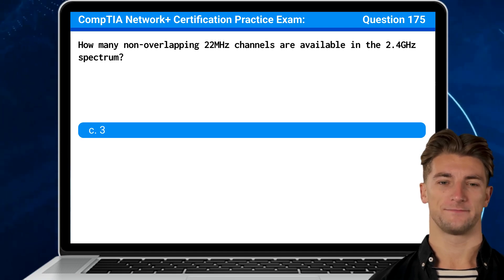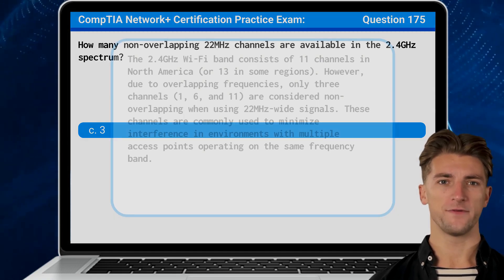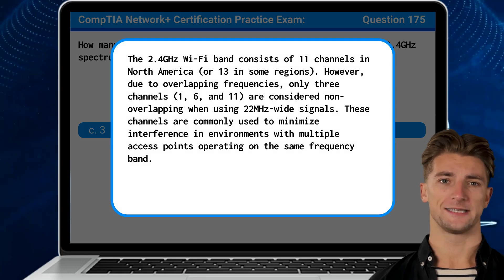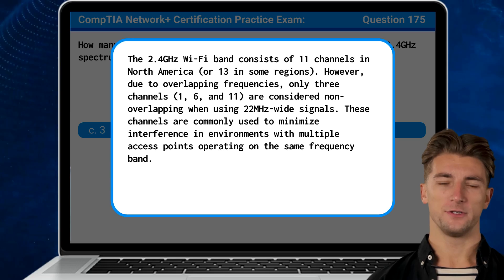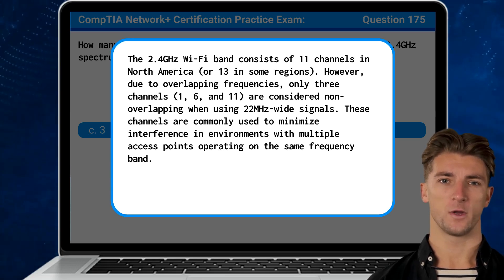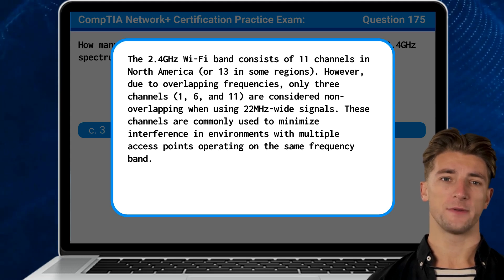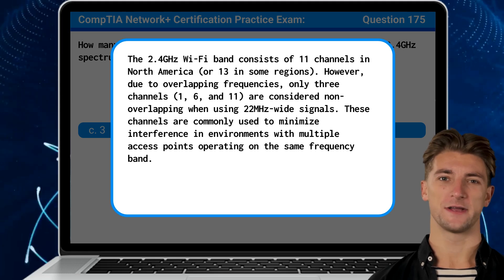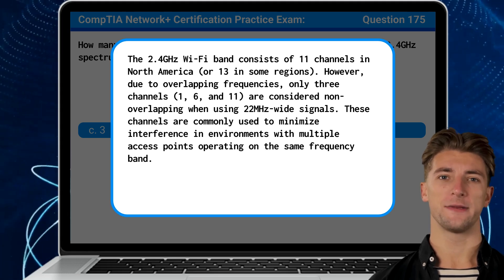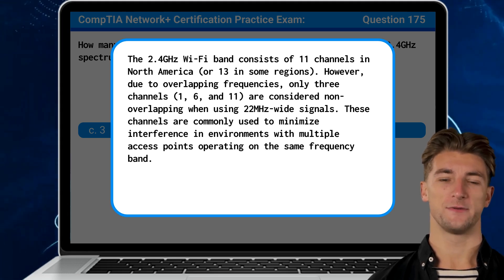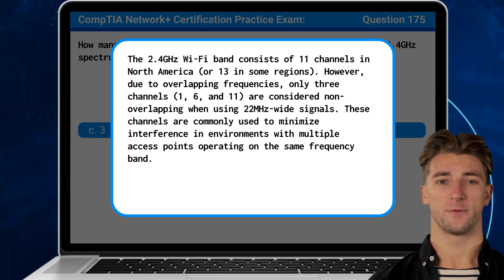The answer is 3. The 2.4 GHz Wi-Fi band consists of 11 channels in North America. However, due to overlapping frequencies, only 3 channels — 1, 6, and 11 — are considered non-overlapping when using 22 MHz wide signals. These channels are commonly used to minimize interference in environments with multiple access points operating on the same frequency band.